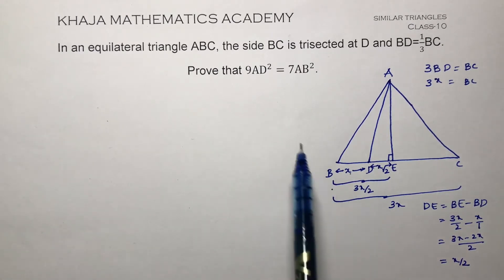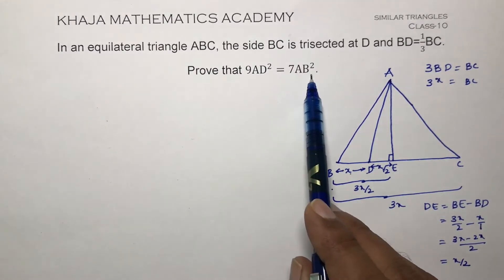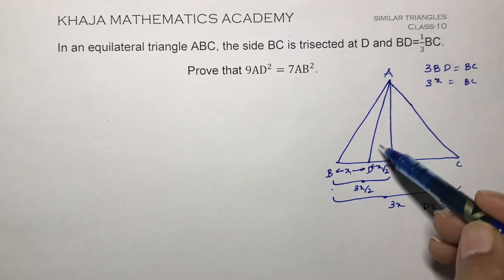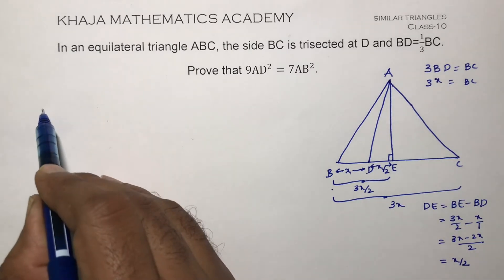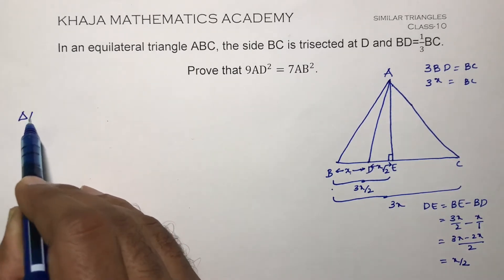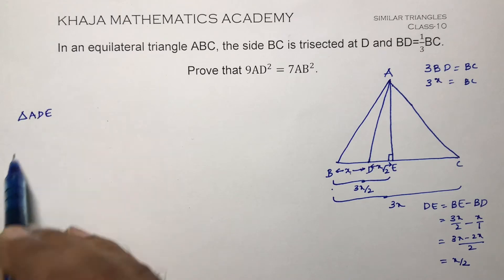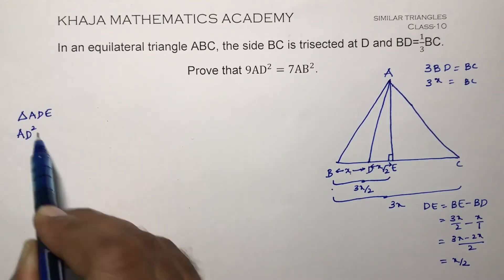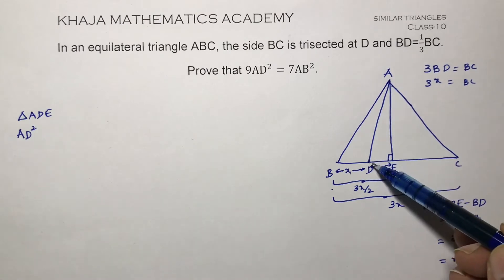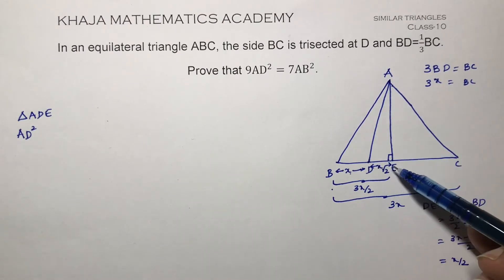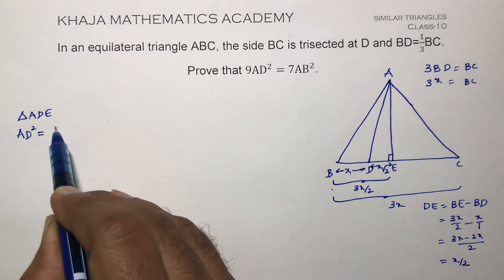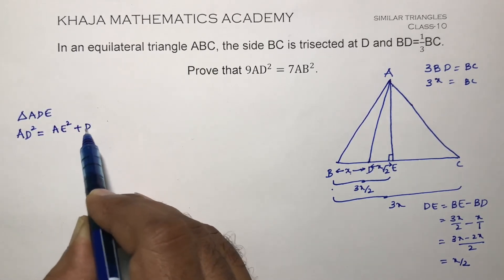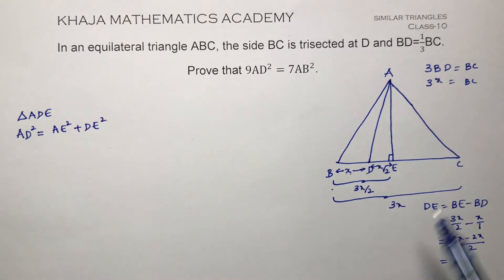Now we need to prove 9AD² equals 7AB². I'll take triangle ADE and apply the Pythagorean theorem. In a right angle triangle, the square of the hypotenuse equals the sum of the squares of the other two sides. So AD² equals AE² plus DE².